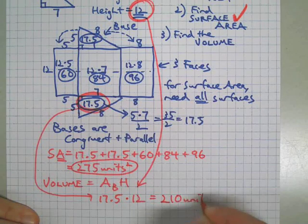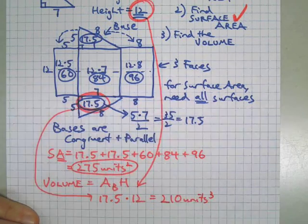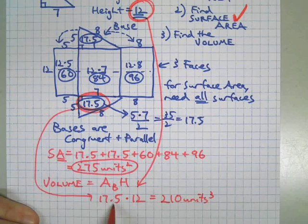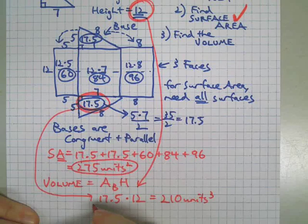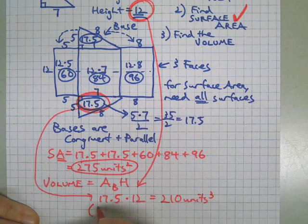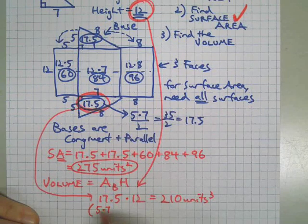And if we multiply 17 and a half by 12, we will get the volume of this object. 210 units cubed. Volume is a three-dimensional object. Remember, we got this 17.5—this may look like two dimensions here, but really the 17.5 came out of our 5 times 7 divided by 2, so we had our two dimensions.